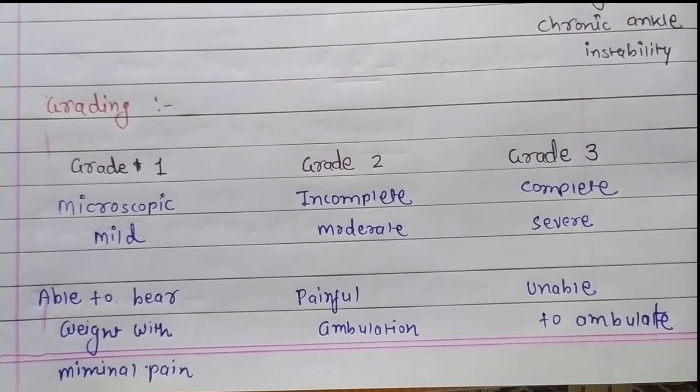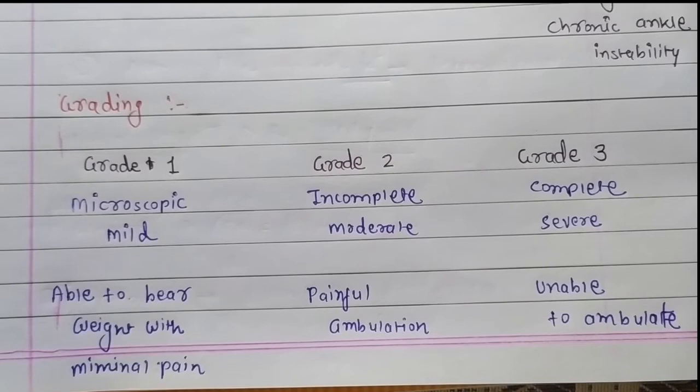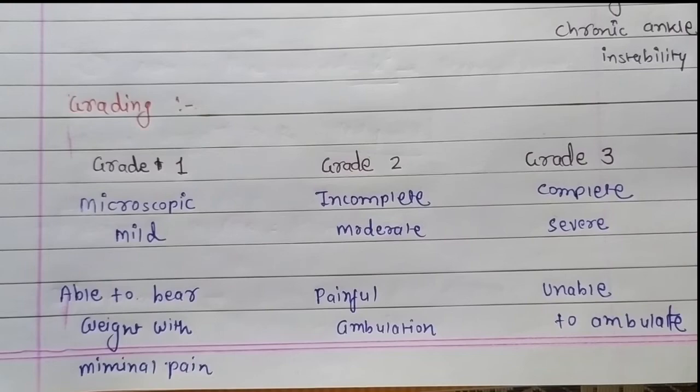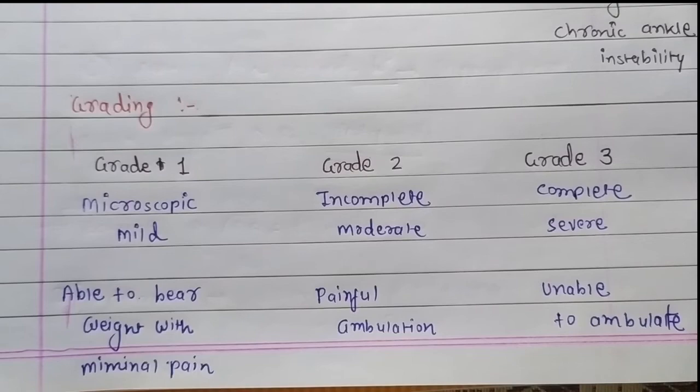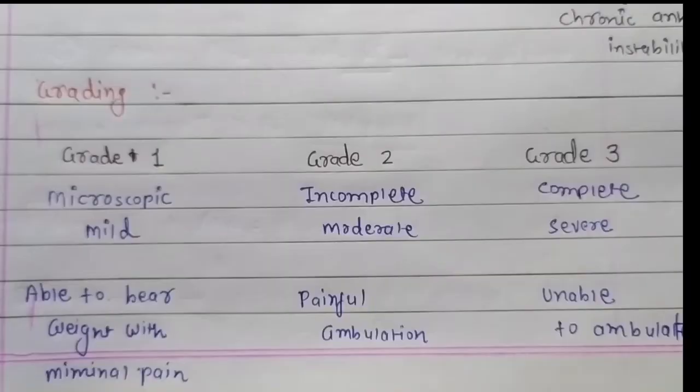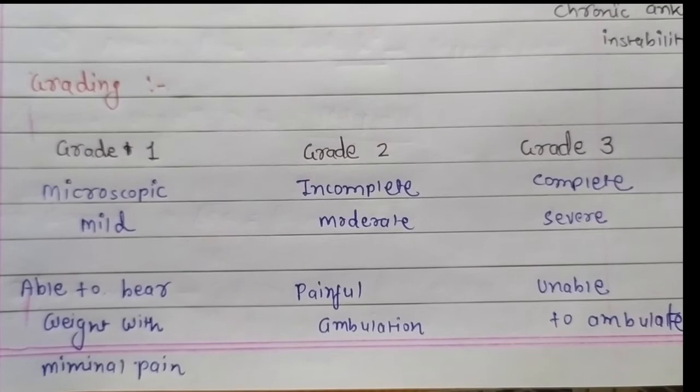Grading of ankle sprain: Grade 1 is associated with microscopic tear of the ligament, mild swelling and tenderness. Grade 2 involves incomplete tears of the ligament with moderate swelling, tenderness, and ecchymosis. Grade 3 is associated with complete tear of the ligament, severe swelling, tenderness, ecchymosis, and significant joint instability.